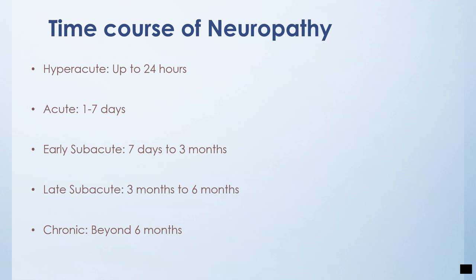The time ranges are classified as: hyperacute starting within 24 hours, acute within the first week, early subacute from a week to around two to three months, late subacute around three to six months, and chronic neuropathy that progresses over six months.